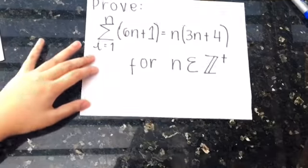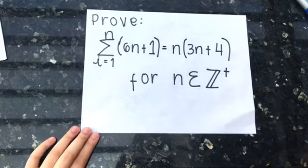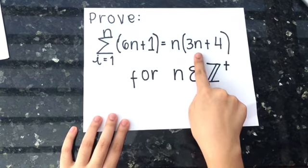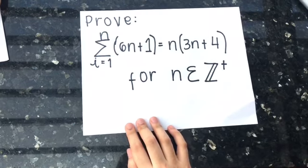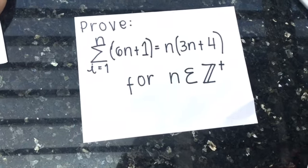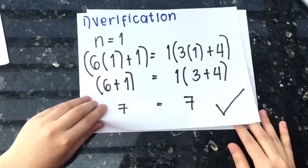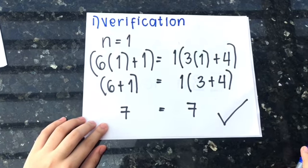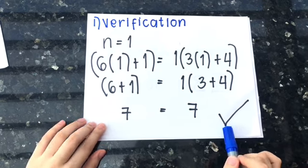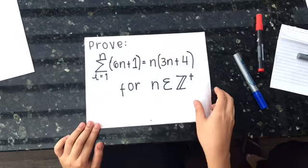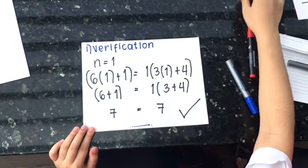So for the first step, verification: We have to substitute at least two positive integers to n to verify that 6n plus 1 equals n quantity 3n plus 4. For n equals 1, substitute 1 in all n and perform the equation.